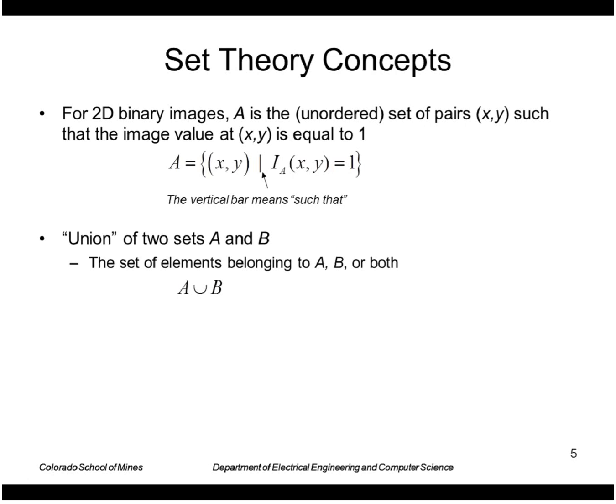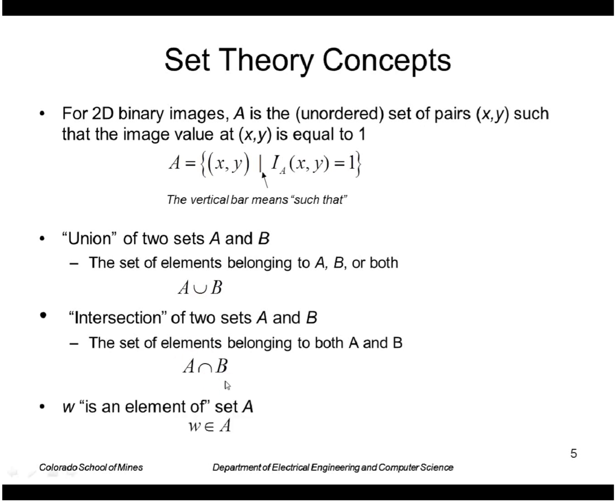The union of two sets A and B are the elements that belong to A or B or both, and we use this symbol to denote the union. The intersection is the set of elements that belong to both A and B, and we use this symbol. When we say w is an element of set A, we use this symbol here.